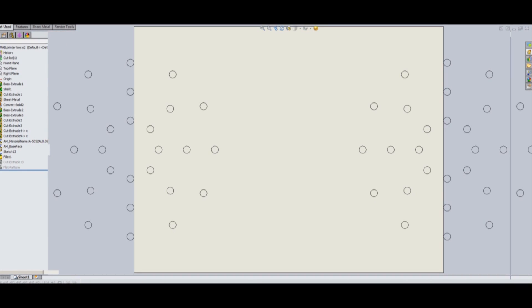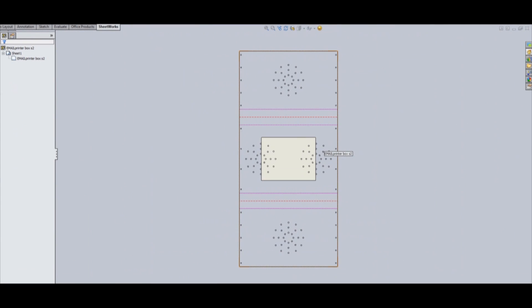Once this model is checked for errors, each part is separated and flattened. Now the process can begin.